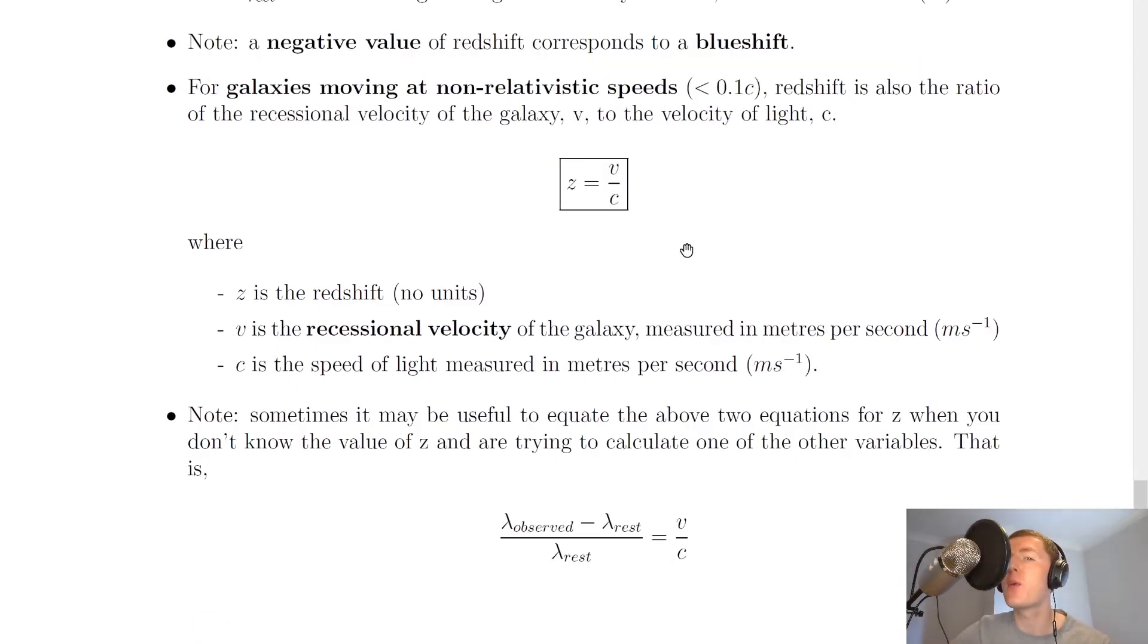We've also got another equation for redshift, and this one is to do with a ratio of speeds or velocities. For galaxies moving at non-relativistic speeds, less than 0.1 times the speed of light, or less than 10% of the speed of light, redshift is also the ratio of the recessional velocity of the galaxy v to the velocity of light c. So all we mean by recessional velocity is the velocity of the galaxy as it's moving away. So z equals v over c is our new equation, where z is the redshift with no units again, v is the recessional velocity of the galaxy measured in meters per second, and c is the speed of light measured in meters per second.